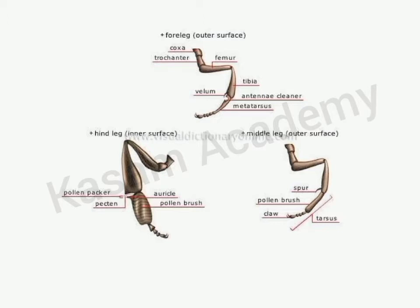The eye brush consists of hairs on the tibia. When the honeybee collects pollen, any pollen dust stuck on the eyes is removed with this eye brush. The antennal cleaner consists of a velum and an antennal comb. The velum is a spur-like structure present at the distal end of the tibia, and the antennal cleaner is a notch-like structure on the metatarsus. When dust or pollen gets stuck on the antenna, the bee places the antenna in the antennal cleaner and removes the dust with the velum.